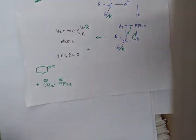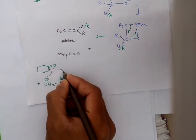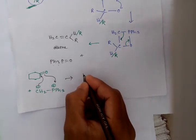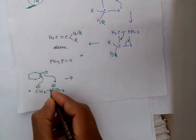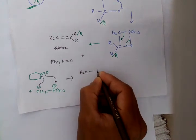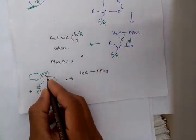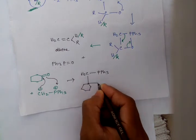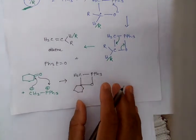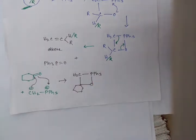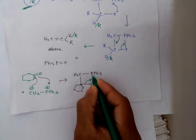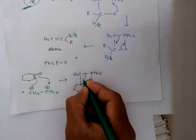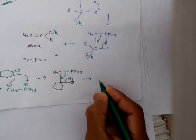The ylide attacks here and the negative charge comes here. CH2-PPh3 attacks and this negative charge forms conjugation with the phosphorus atom. Because the phosphorus-oxygen bond is very stable, this comes here and we get this product.